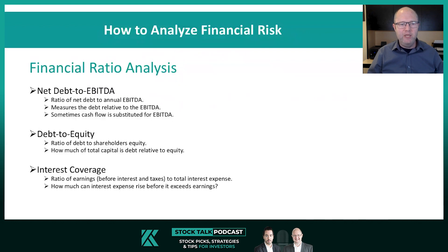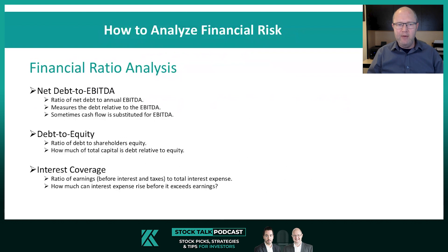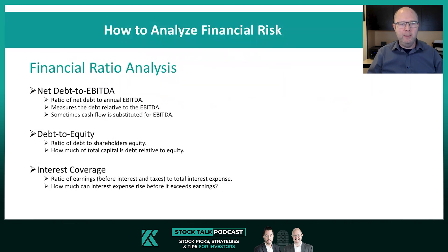The other ratio is the debt to equity — the ratio of debt to shareholders' equity — essentially how much of the total capital of the business is financed with debt relative to equity. This is a very popular metric. But now you're using shareholders' equity, so you're relying on a lot of accounting terms. The debt is going to be a market term — you can trust the debt more. The shareholders' equity, you need to be a little bit cautious. So while we do use the debt to equity ratio, we don't rely on it too much.